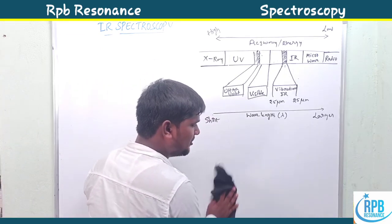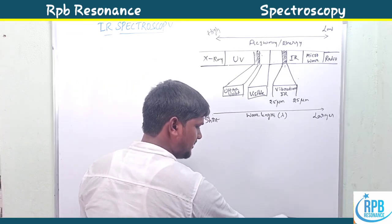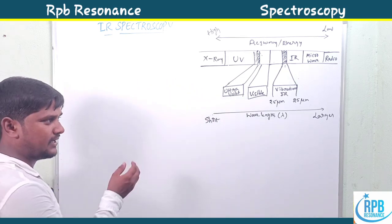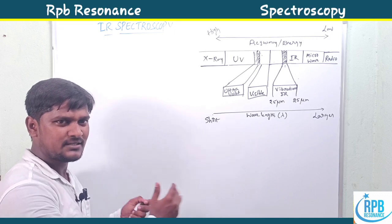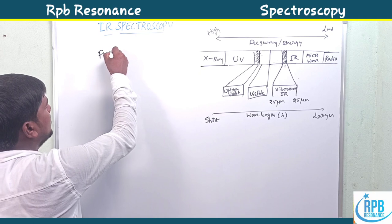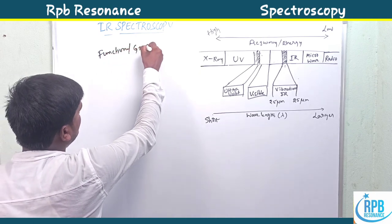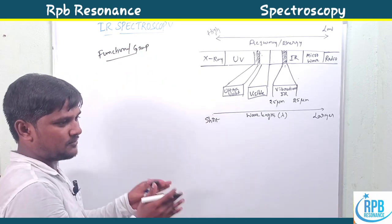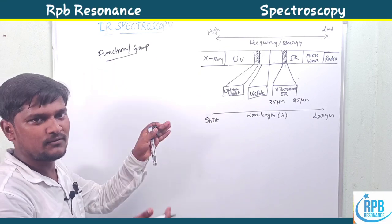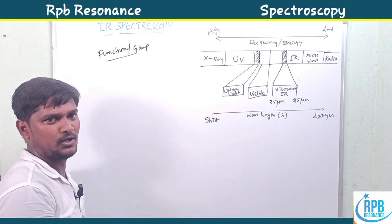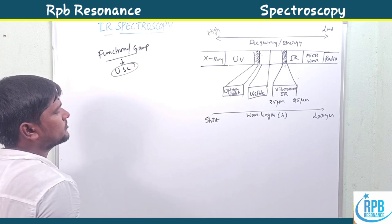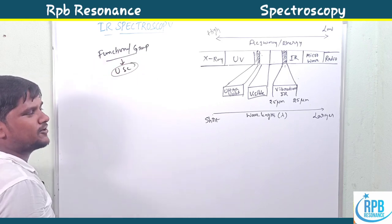To summarize: mu not equal to zero means IR active molecule; mu equal to zero means IR inactive molecule. Based on the change in the dipole moment, we can predict different functional groups in organic chemistry. The main application of IR spectroscopy is the prediction of functional groups of organic molecules.